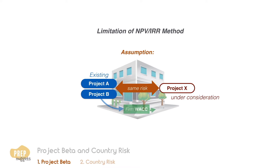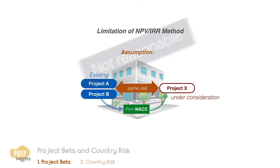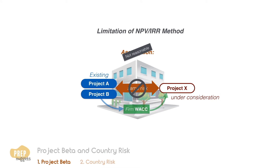If we use this WACC to evaluate a new project, the implicit assumption is that this new project has the same level of risk as the existing projects. However, this may not be a reasonable assumption, as most of the time the project under consideration is of a different risk level. This implies that the firm's WACC is not suitable for evaluation of the project.